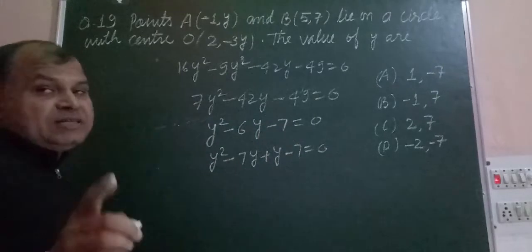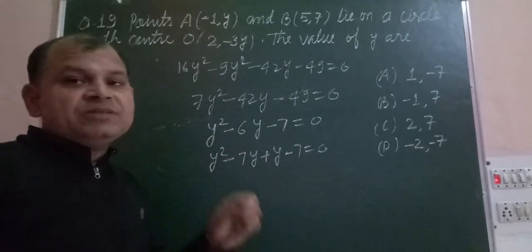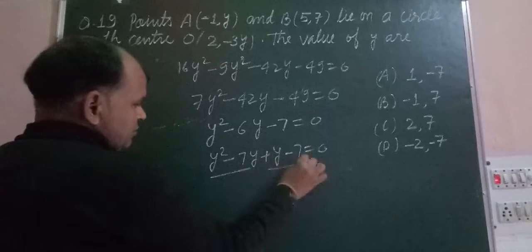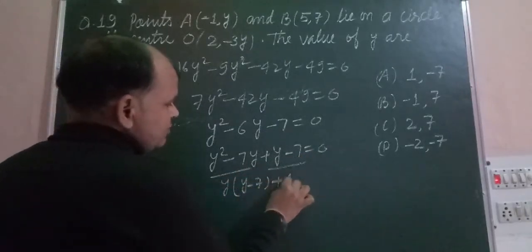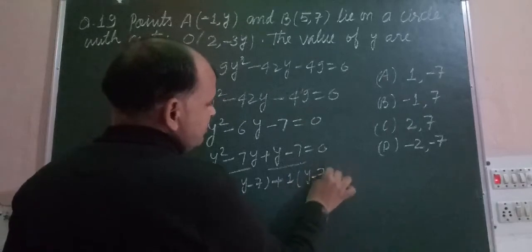Taking Y common from the first two terms gives Y(Y - 7), and taking 1 common from the last two gives 1(Y - 7), so we have (Y - 7)(Y + 1) = 0.